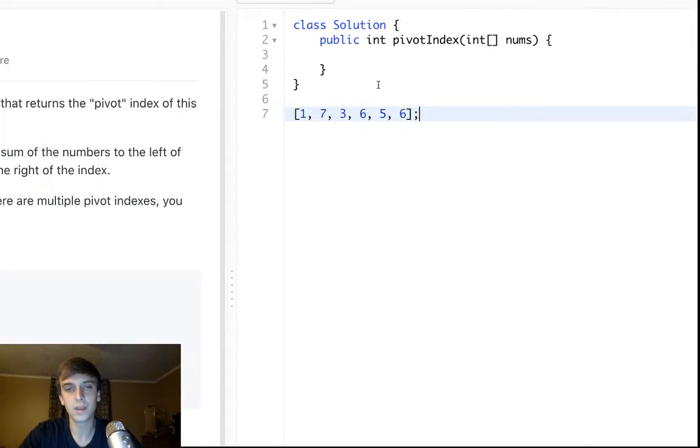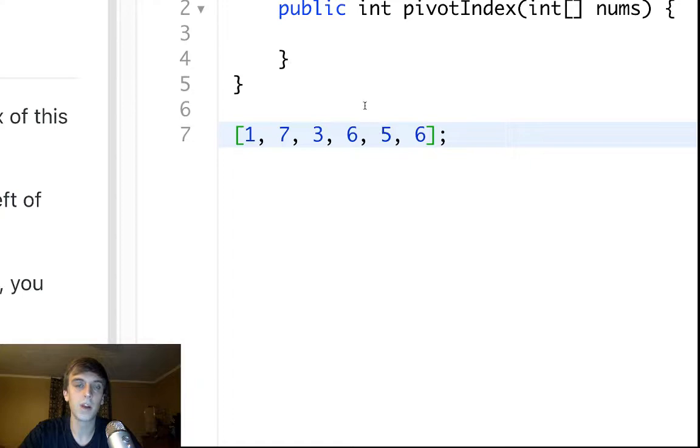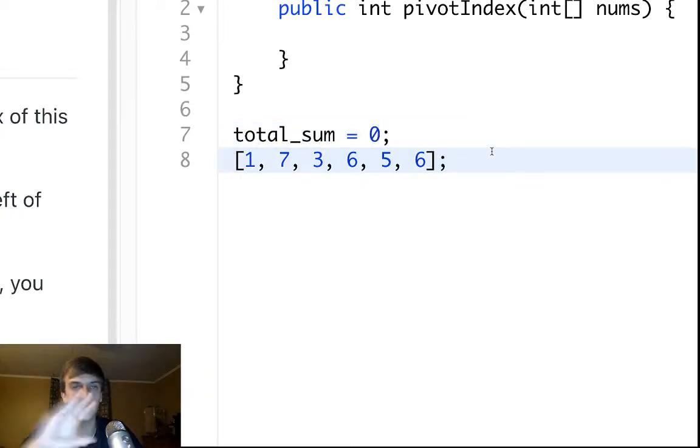Now how do we do this? You could do a double for loop, like loop through each number and then loop through the array again and check, but that's pretty stupid. The obvious thing is probably just get a sum first. You want to sum all the elements, so you loop through once. You go okay, one plus seven is eight, plus three is eleven, plus six is seventeen, plus five is twenty-two, plus six is twenty-eight. You got twenty-eight, you know the sum of it now.